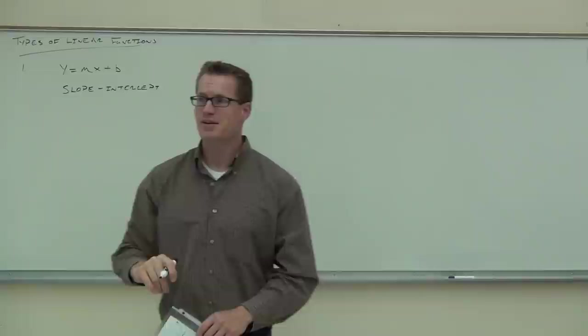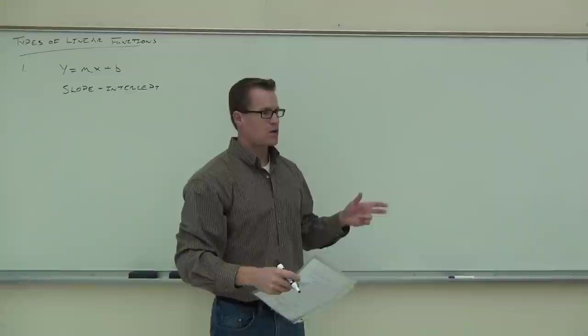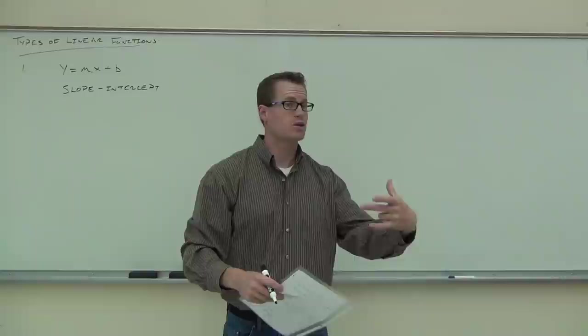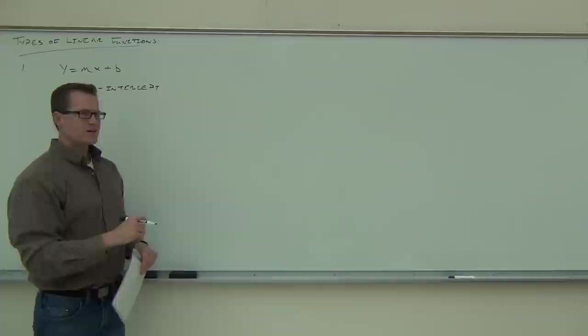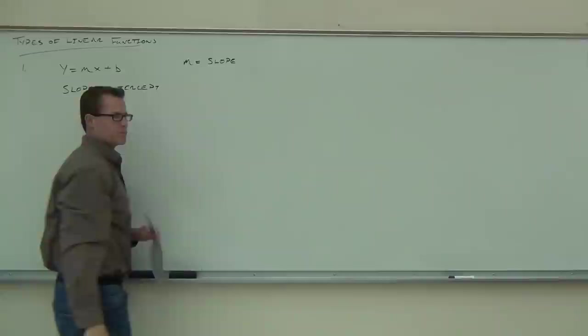The first one looks like this. Have you seen that form before? What's it called? This is the slope-intercept form. The thing about math is that sometimes the names aren't very creative — it's called slope-intercept because it gives you the slope and the intercept — specifically the y-intercept. Which letter up here represents the slope? The m. So m is our slope.